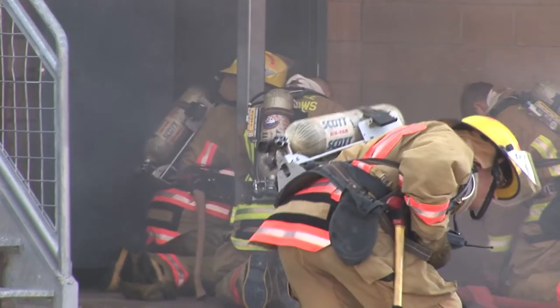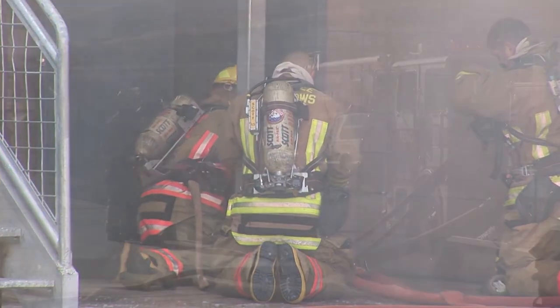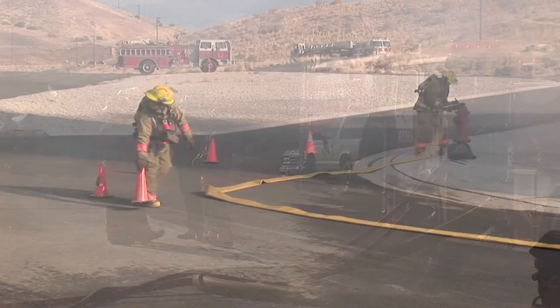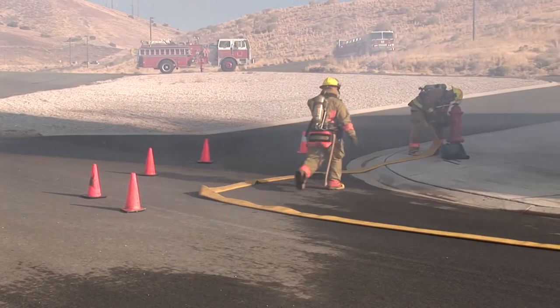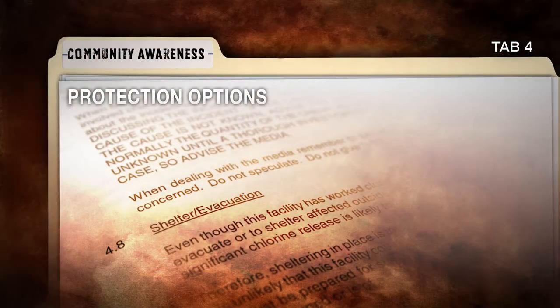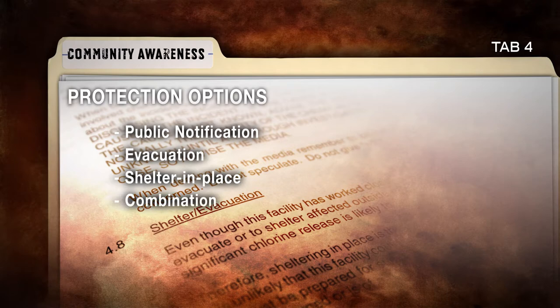The object of any preventative protection plan is to ensure the safety of responders and the general public from potential harm during an incident. This plan would be implemented only after the isolation perimeter is established and hazard control zones are defined. Tactical options for the protection of employees and the public include public notification, evacuation from the affected area, sheltering in place, or a combination of all the above.